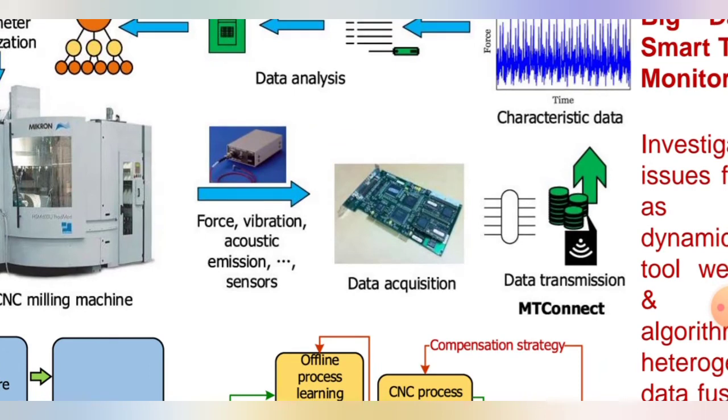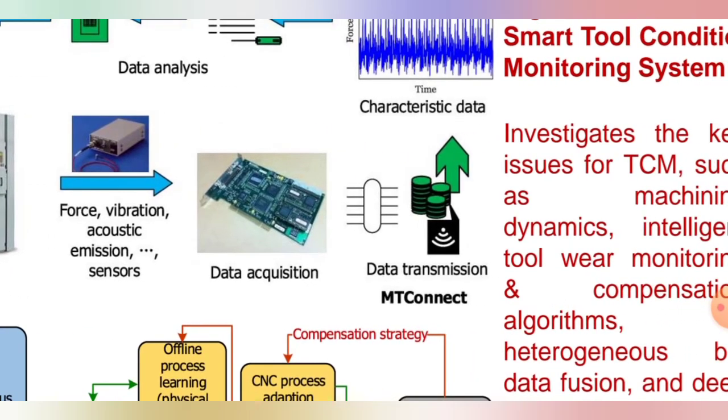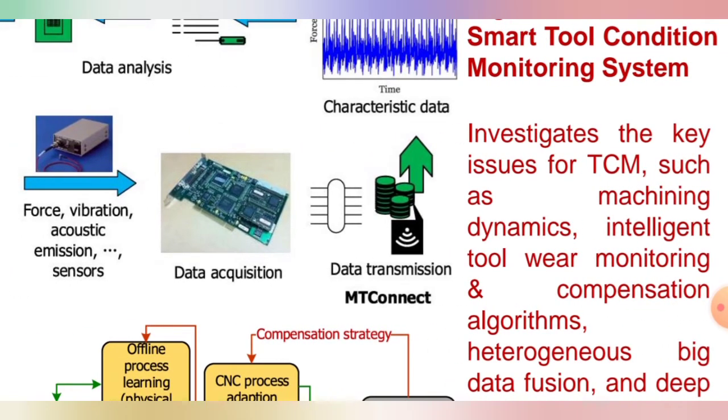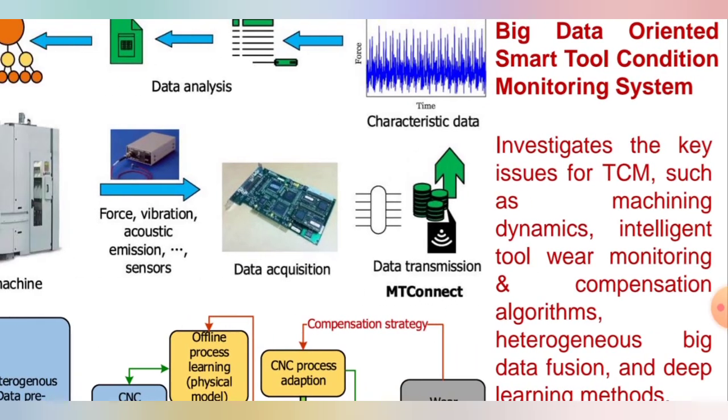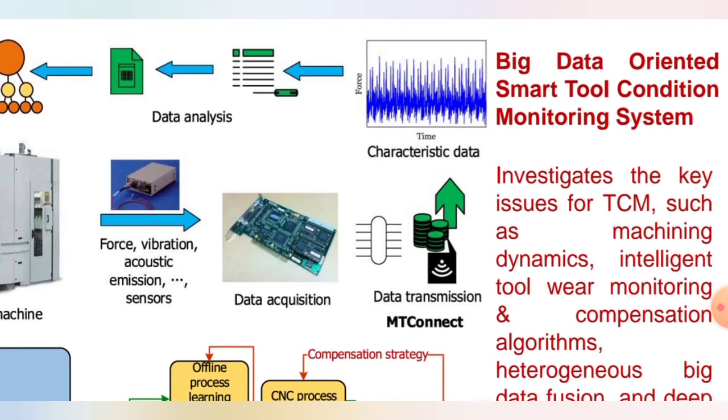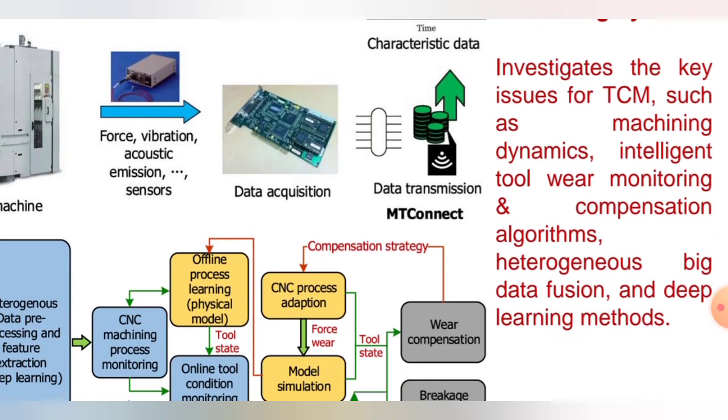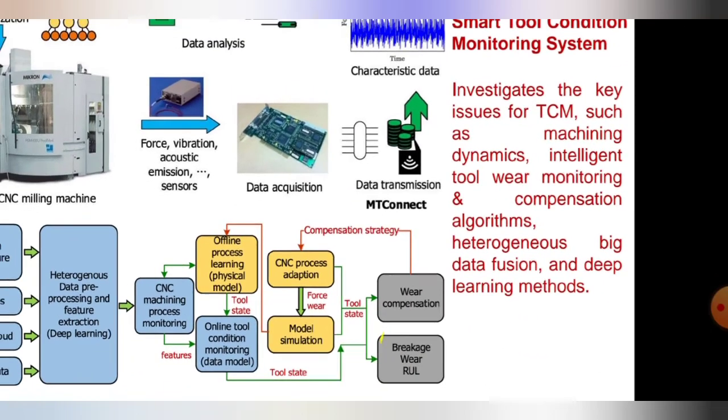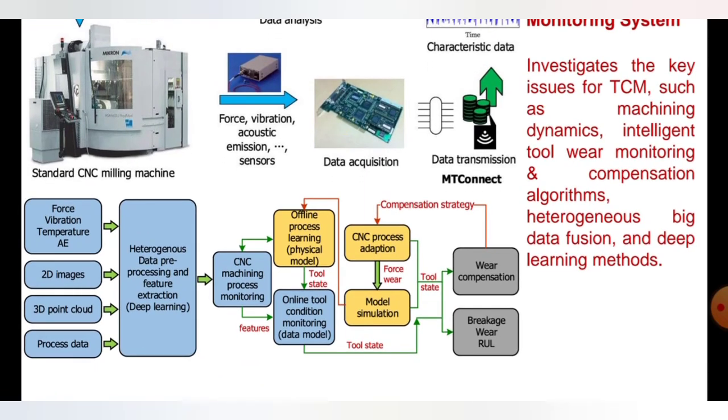The force, vibration, and acoustic emissions parameters are measured, so the data acquisition chip is used for data transmission via IoT connect. The data transmission is sent further to characteristic data. These processes keep going until we get the required results.